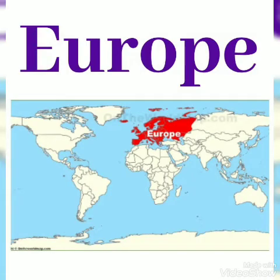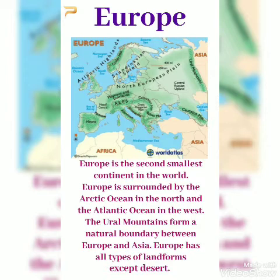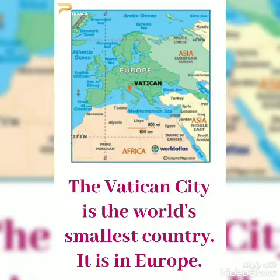Europe is the second smallest continent in the world. It is surrounded by the Arctic Ocean in the north and the Atlantic Ocean in the west. The Ural Mountains form a natural boundary between Europe and Asia. Europe has all types of landforms except desert. The Vatican City, the world's smallest country, is in Europe.